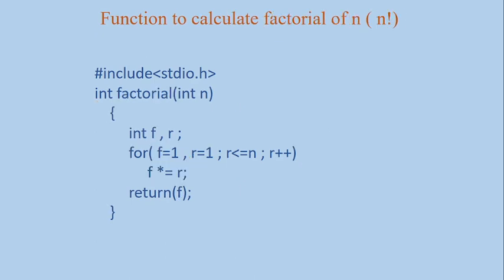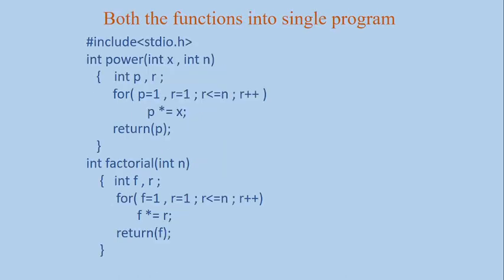Similarly, the factorial function receives one value of n. This part will calculate n factorial, and it returns the value of factorial. So the factorial function receives one value and returns one value. Now combine these two because we need them in a single program. Power receives x and n and returns x raised to n; factorial receives value of n and returns n factorial.